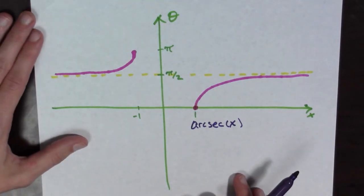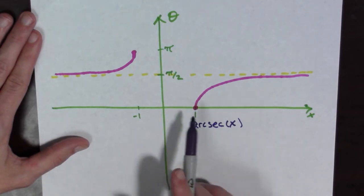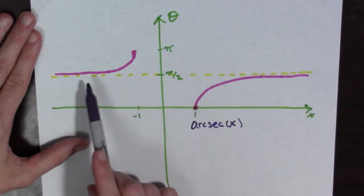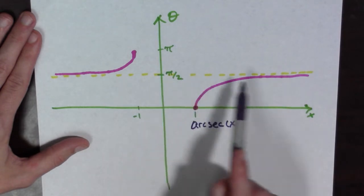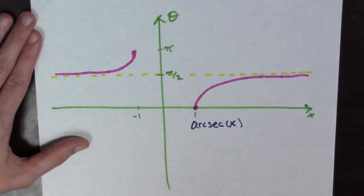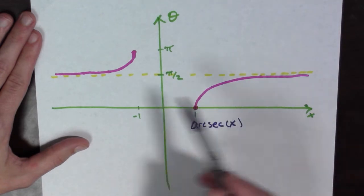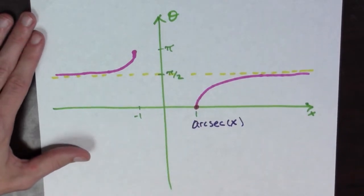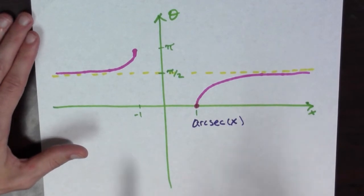The domain of arc secant is the real numbers whose absolute value is greater than or equal to 1. And there's a horizontal asymptote for arc secant at the line y equals pi over 2. Arc secant is always increasing — here it's increasing and here it's increasing — so its derivative had better always be positive.